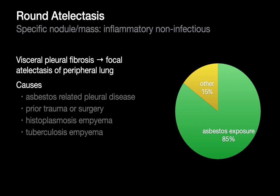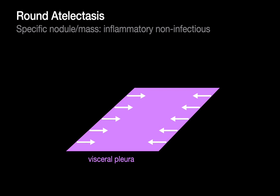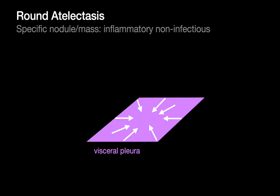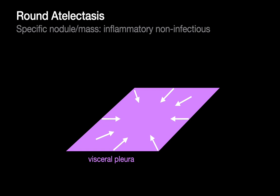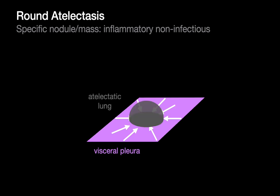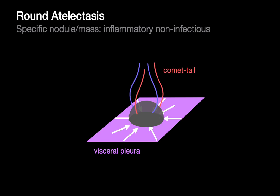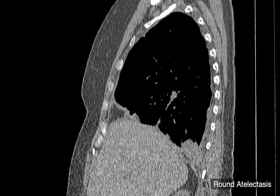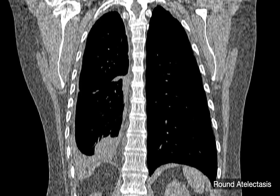A special variant is round atelectasis, where two-dimensional centripetal fibrosis of the visceral pleura causes lung to be atelecticized into a ball. Instead of blood vessels diverging as you move to the periphery, they converge and look like a comet around the round atelectasis — the comet tail sign. This was also discussed in the specific lung nodule and mass talk.